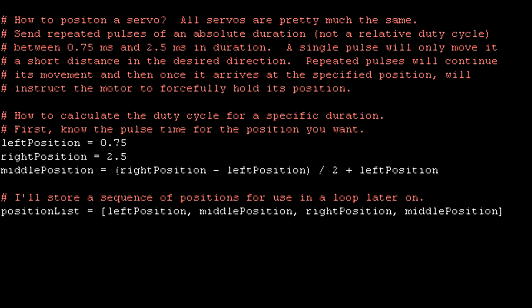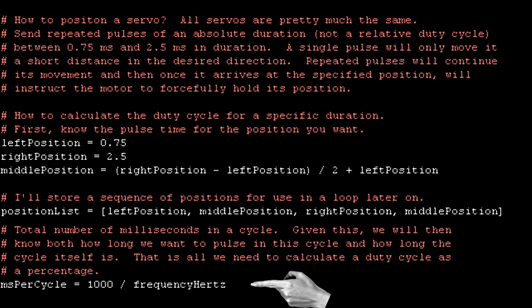So we're going to have to specify what those pulse times are and then calculate the duty cycle percentage based on that in a moment. So here I specify the absolute times that our motors like. Most of these motors are pretty much the same. They have a left position somewhere around one millisecond, maybe a little less, and a right position somewhere around two and a half milliseconds. I'm calculating a left, right, and middle position because we're going to set our motor to each of those positions later on. You can play with these pulse times to see what works best for your motor.